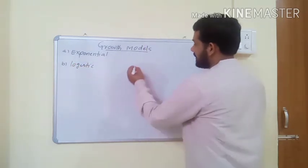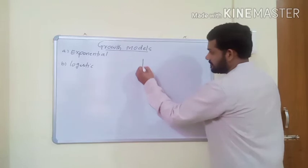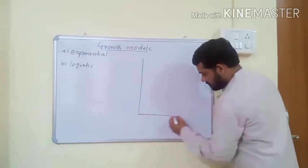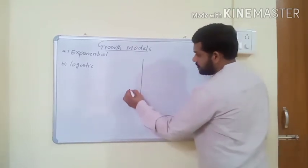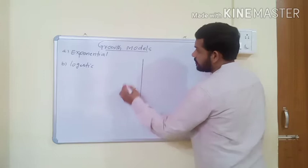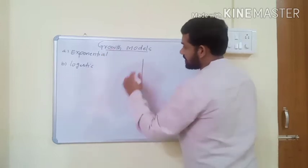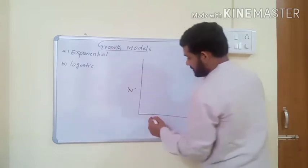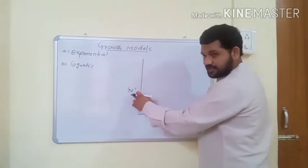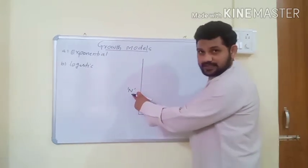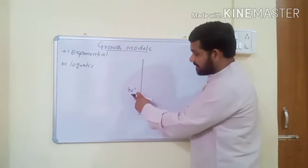This is the graph with respect to both growth models — both exponential and logistic. The vertical axis represents population density, designated as N.